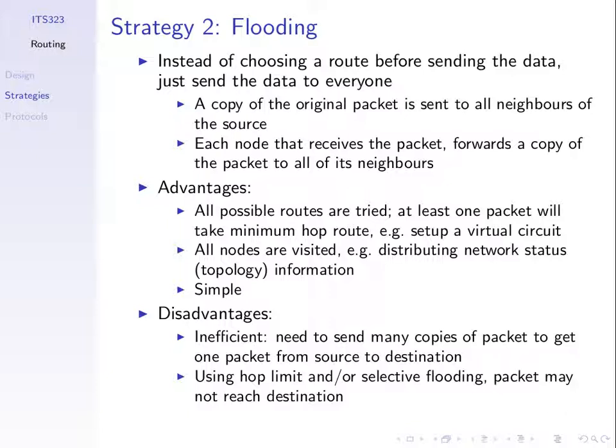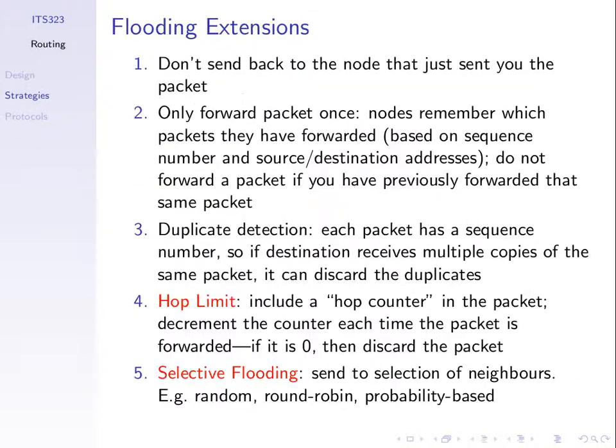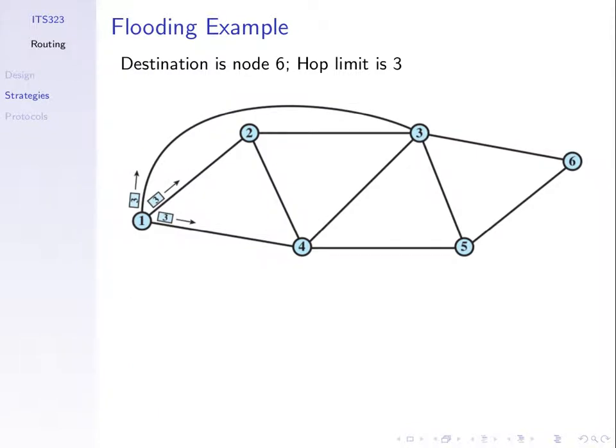Flooding is very simple — there's no need for running a separate routing protocol, no need to calculate least cost paths, and no need to know about the network topology in advance. You just need to know who your neighbours are, which every node knows anyway. Another benefit is that when you send copies of packets, all possible paths will be traversed, so at least one packet will take the minimum hop route.